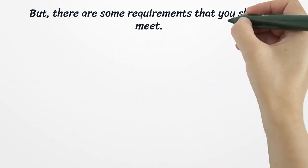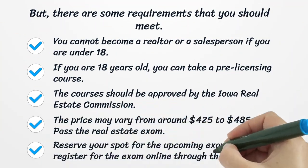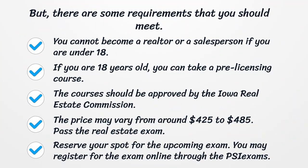But there are some requirements that you should meet. You cannot become a realtor or a salesperson if you are under 18. If you are 18 years old, you can take a pre-licensing course. The courses should be approved by the Iowa Real Estate Commission. The price may vary from around $425 to $485.